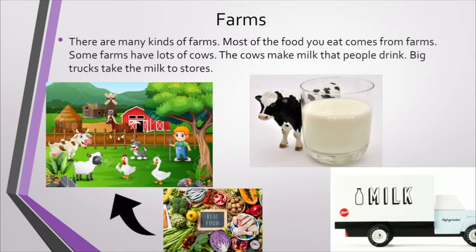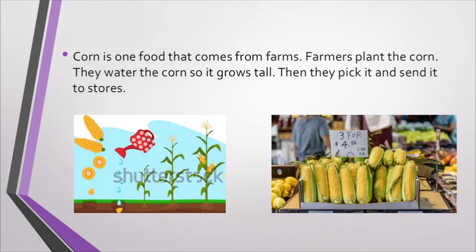Next paragraph, only with the help of images. So, corn is one food that comes from farms. And farmers plant the corn. They water the corn so it grows, grows tall.